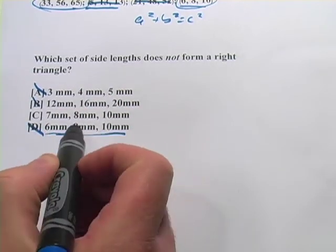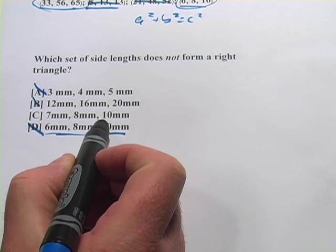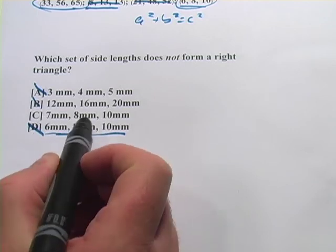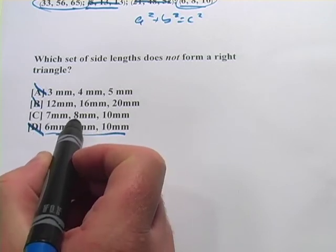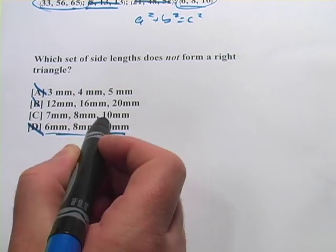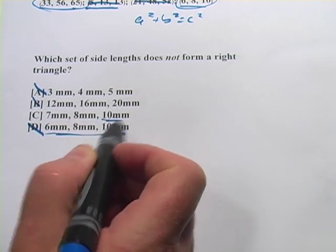Only this one doesn't seem to be. And in your head, you could probably do this pretty quickly. 7 squared is 49. 8 squared is 64. If you add those up, they're going to be more than 100. And here we would have 100. 10 squared is 100. So c is the one that could not be a right triangle.